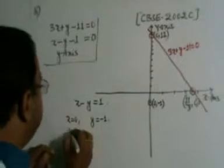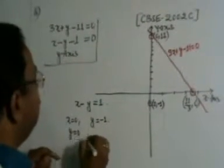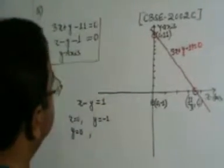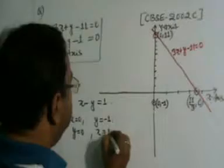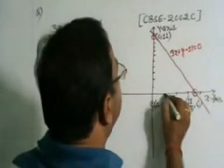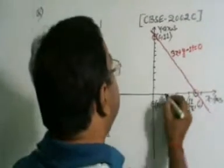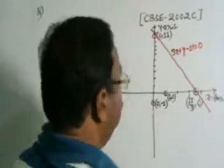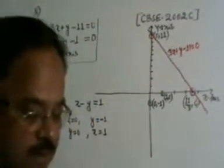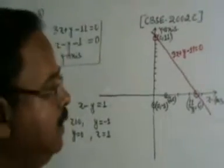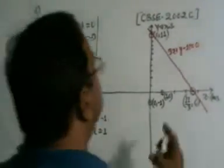Similarly, if we put y is equal to 0, we have x is equal to 1. y 0 put kiya, toh kya hoga? x is equal to 1. Toh y 0, y 0 hoga, y x-axis per, aur yeh hoga? 1. Toh yeh point mila humko, now this is 1, 0. Ab in dono points ko mila denge, dekhe, in dono points ko mila denge. Humko kya milega? Yeh line milega.